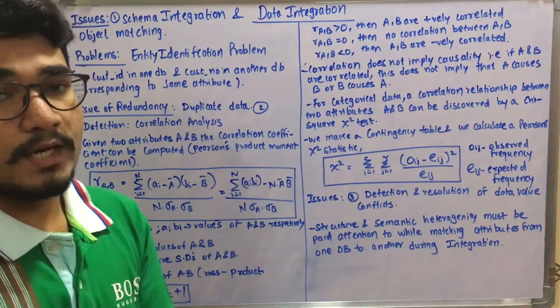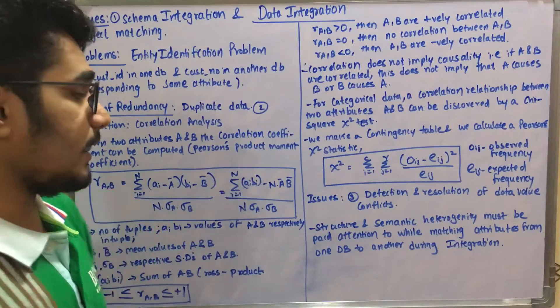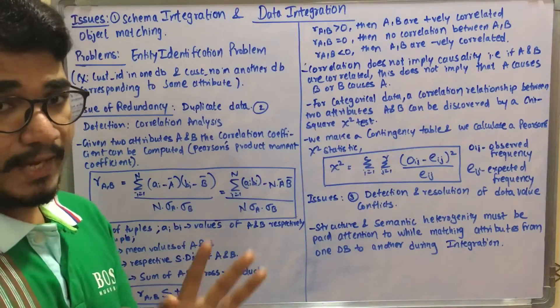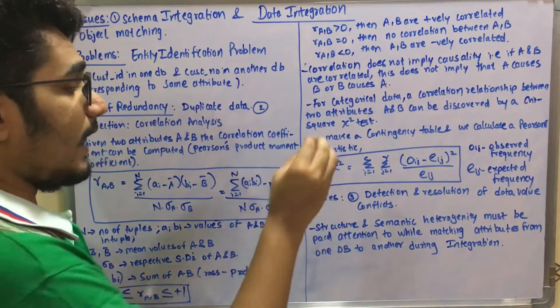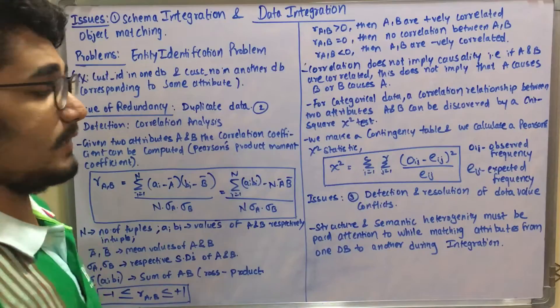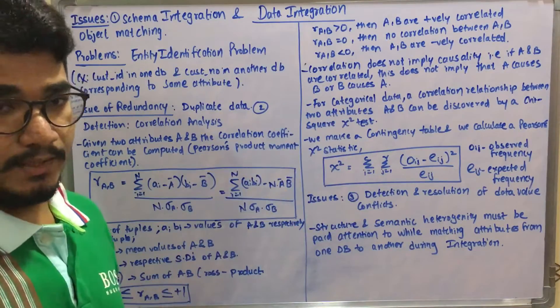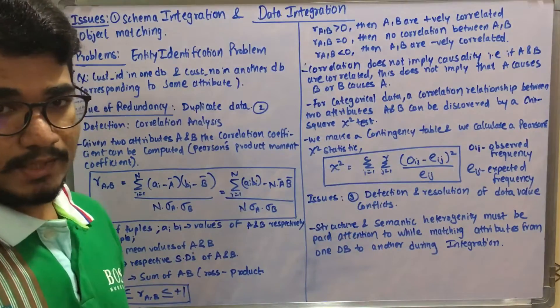While doing data integration, two things have to be kept in mind: the structure of the data has to be preserved as it is, and you have to keep semantic heterogeneity. Semantics means the meaning.